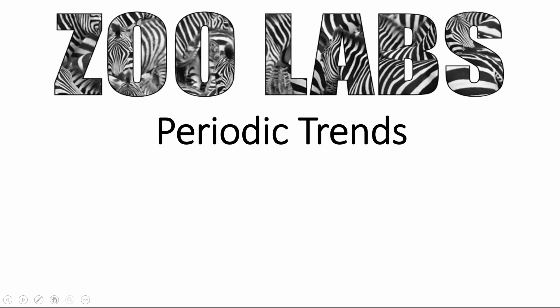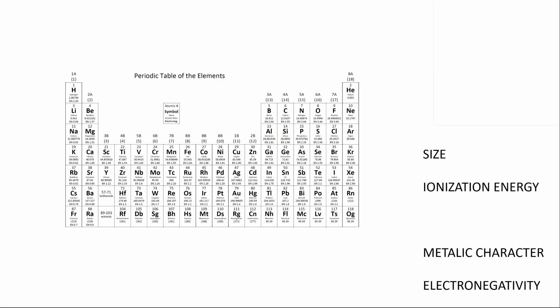There are several interesting periodic trends as we go left and right or up and down in the periodic table that can be explained by these atomic orbitals and electron configurations. As we look at the periodic table, there's four periodic trends I want to talk about.